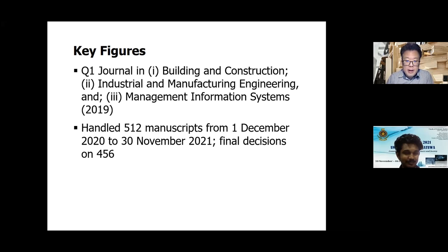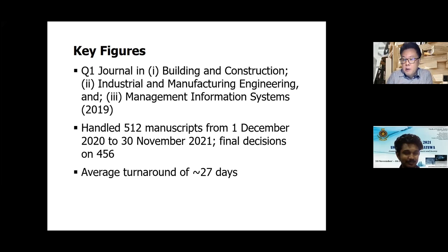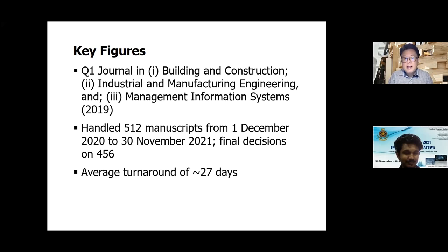Looking at the statistics over the last 12 months — from first December last year to today — we handled 512 manuscripts and made final decisions on 456 submissions. Our average turnaround is roughly 27 days. That doesn't mean every manuscript is turned around in that period — desk rejections can happen within a few days, while those with potential for acceptance take longer because they go through the full peer review process, and also factor in the time authors take to revise their manuscripts.